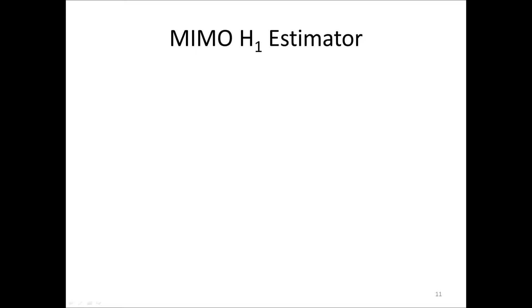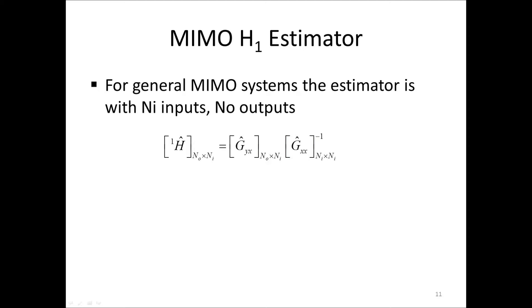We formulated the H1 estimator only for a single output, but it's easy to show that if we have n sub i inputs and n sub o outputs, by adding one row for each output, the general MIMO H1 estimator is equal to the matrix h-hat, which is n sub o by n sub i. And this frequency response function matrix equals g-hat sub yx, which is n o by n i, times the inverse of g-hat xx, which is the number of inputs by the number of inputs. You should also remember that the general formulation of the FRF matrix is that H times x equals y, where x is the input and y is the output.